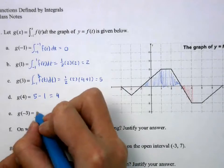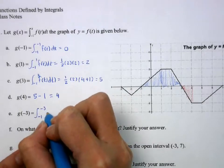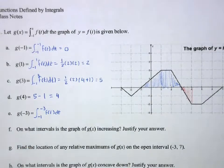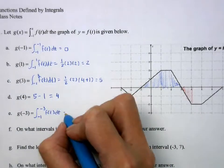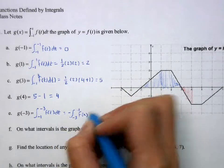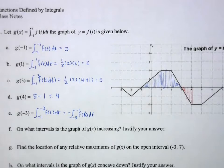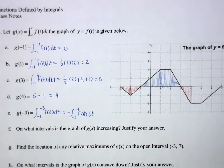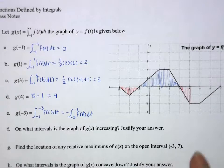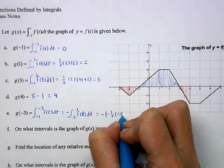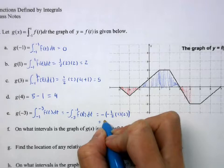For g of negative 3, that's the integral from negative 1 to negative 3 of f of t. Since we're not used to seeing integrals with the lower bound larger than the upper, we switch it to the negative of the integral from negative 3 to negative 1. That integral is a triangle below the x-axis, so it's negative. Negative times negative one half times 1 times 2 gives us positive 1.